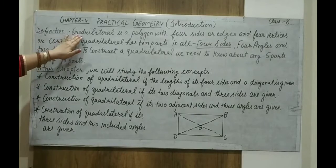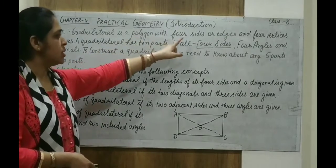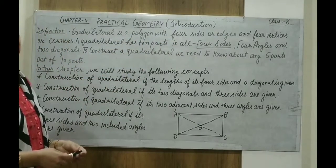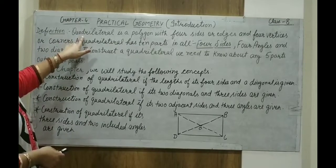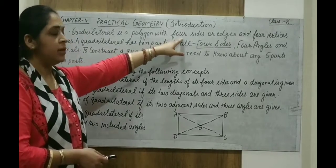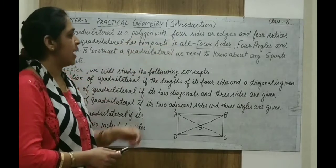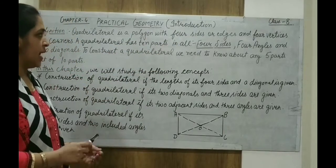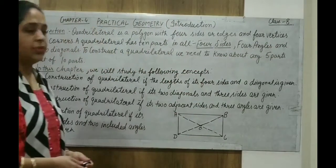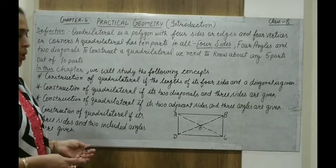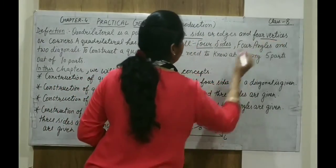Definition: A quadrilateral is a polygon with four sides or edges. You know very well what a quadrilateral is — it is a four-sided figure, or we can say a polygon with four sides or edges and four vertices. These two parts of the quadrilateral are important: four sides and four vertices.